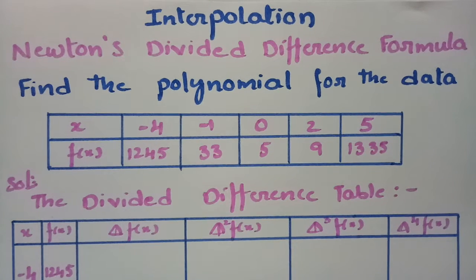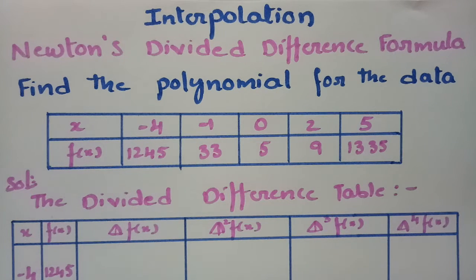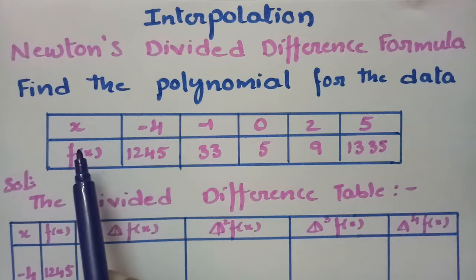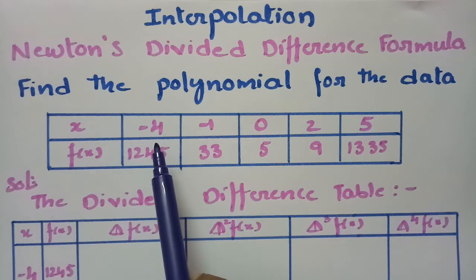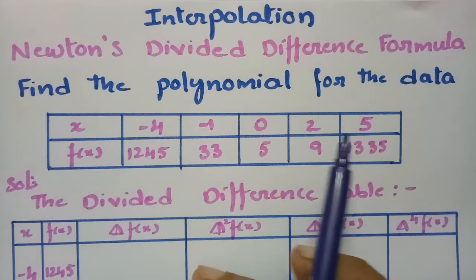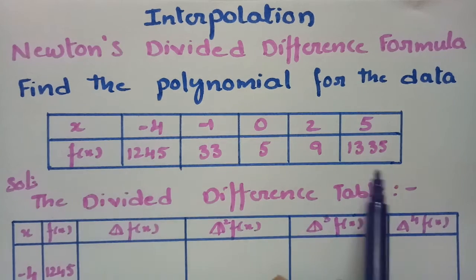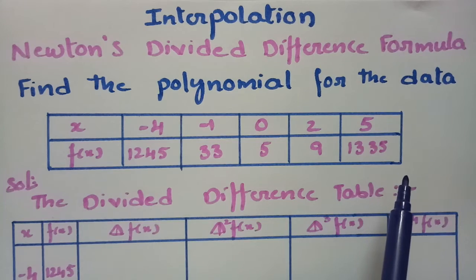In today's video, I am going to use Newton's divided difference for finding the polynomial for the given data. The x values are given as minus 4, minus 1, 0, 2, 5, and the corresponding f(x) values are tabulated here.